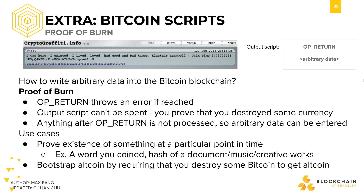As we've mentioned before, the Bitcoin blockchain is immutable, meaning that it cannot be changed realistically. Transactions are also timestamped, so people can see that you have actually coined this word in the past.